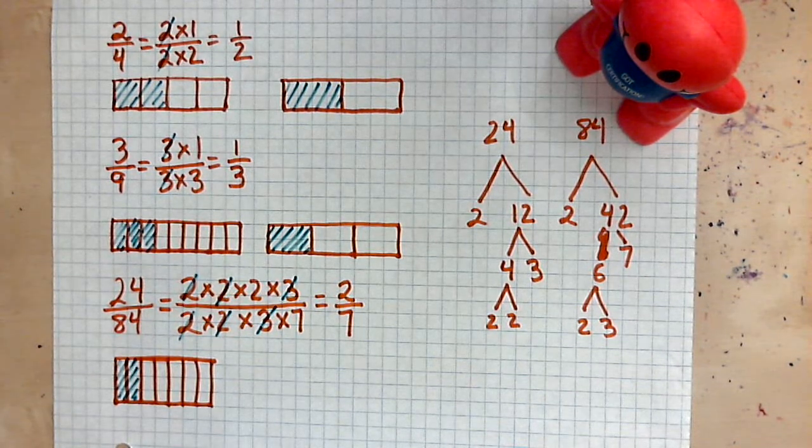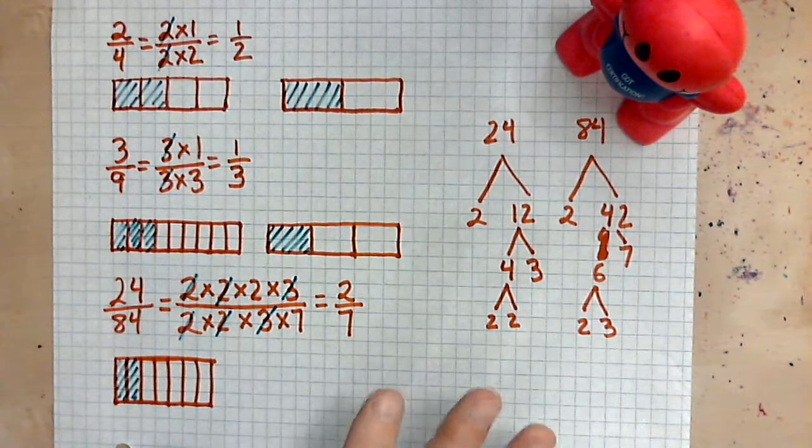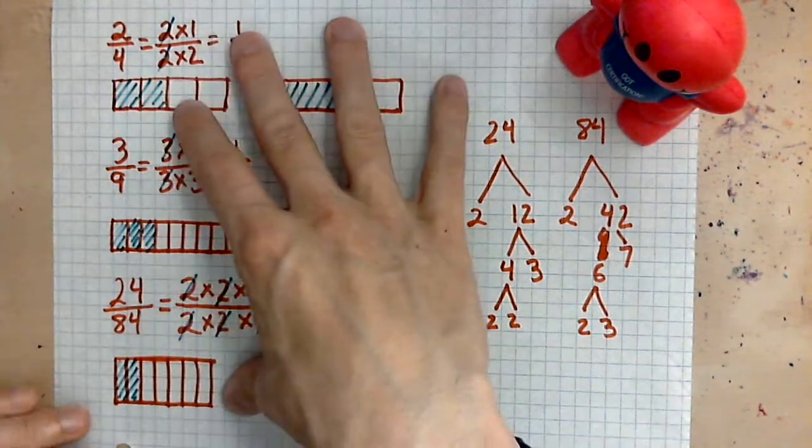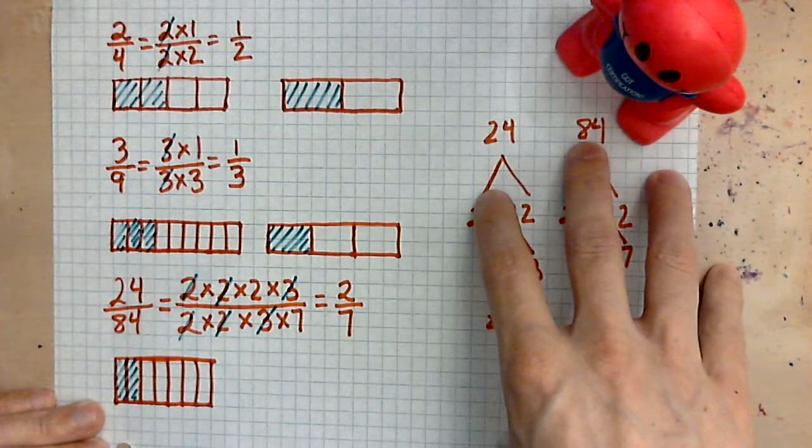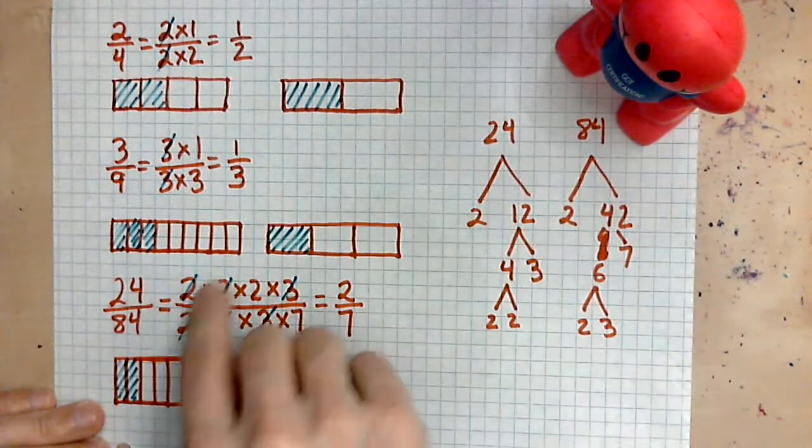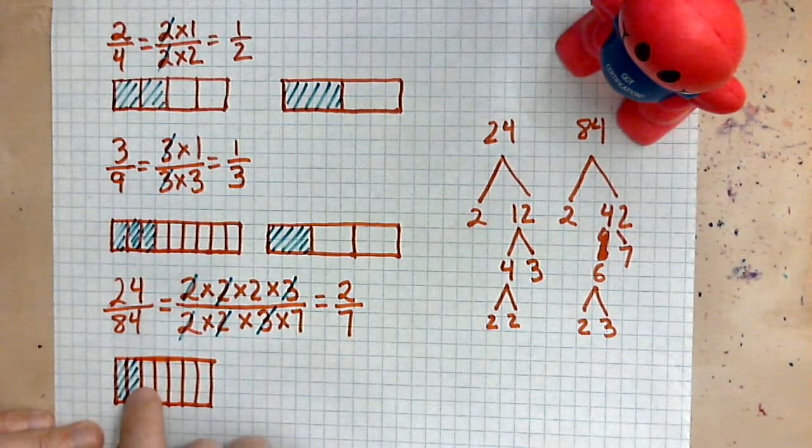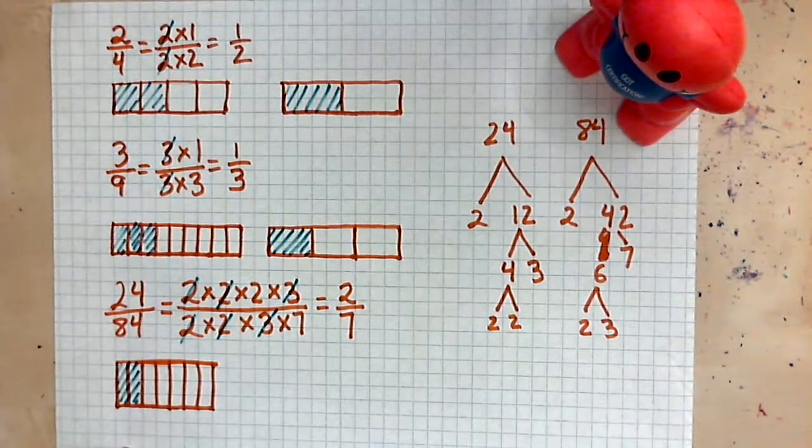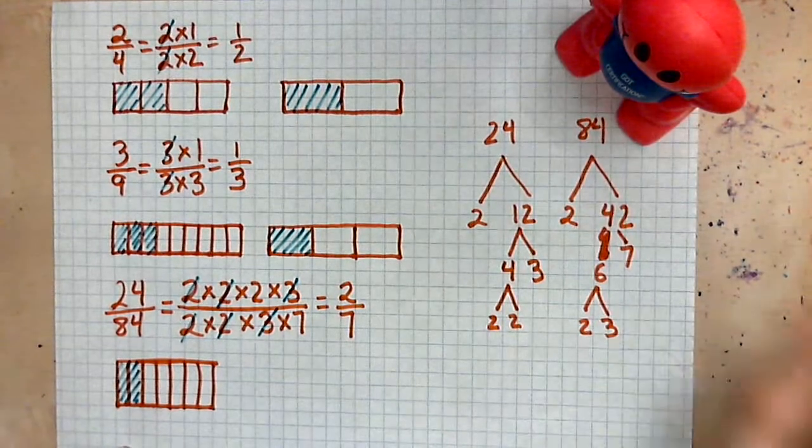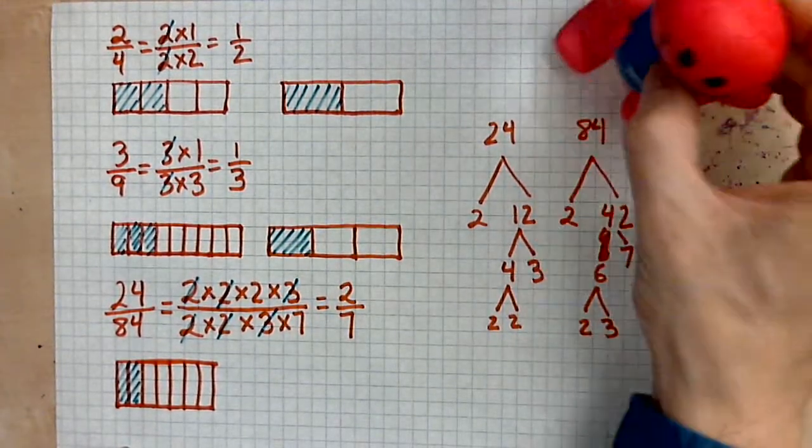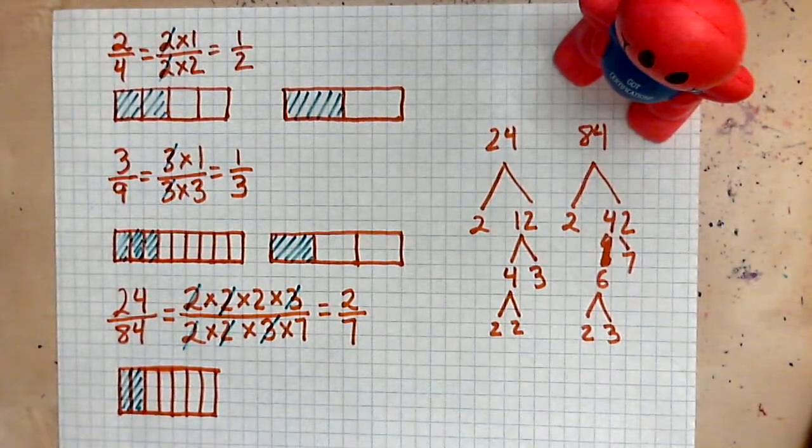So these are the fundamentals of reducing fractions, both using pictures, using factor trees. And then by cancelling common factors, we see how simple things can be made. So that is it. Thank you for watching. And don't forget to smile always. Have a great day. Bye.